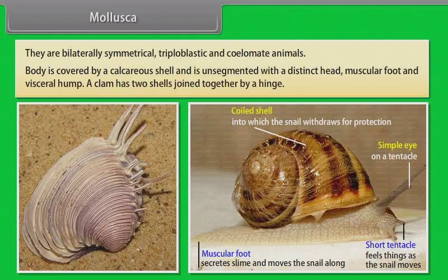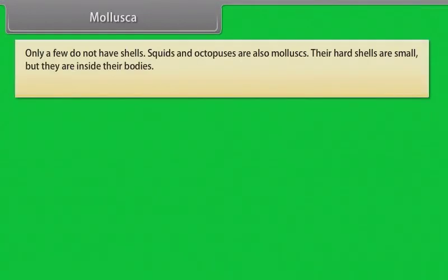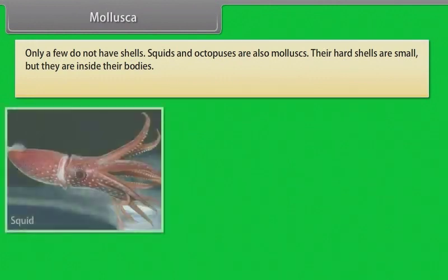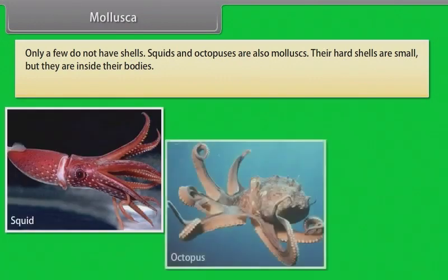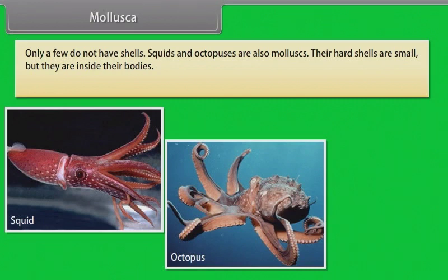A clam has two shells joined together by a hinge. Only a few molluscs do not have shells — squids and octopuses are also molluscs, and their hard shells are small and inside their bodies.